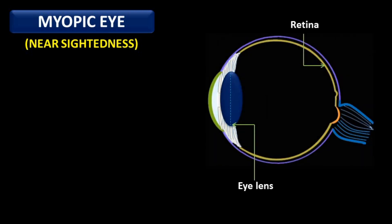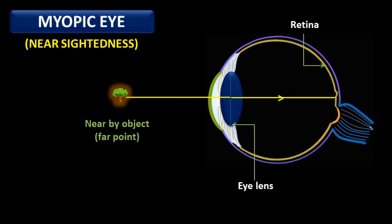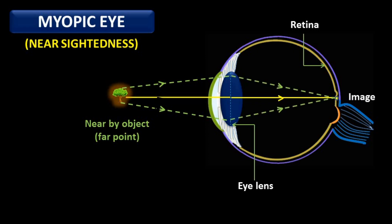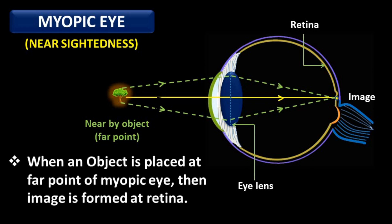Now, the myopic eye. It is also known as nearsightedness. For a nearby object or object at the far point, rays coming from the nearby object, after refraction, meet in a single point on the retina. So in the myopic condition, this person can see a nearby object clearly. When an object is placed at the far point of the myopic eye, then the image is formed on the retina.